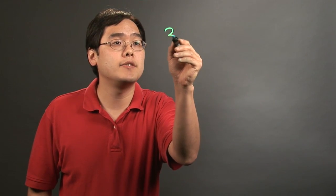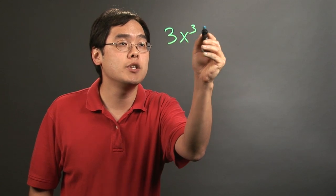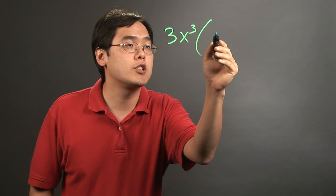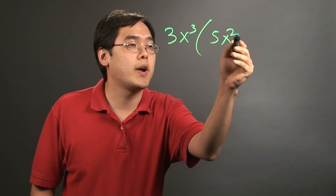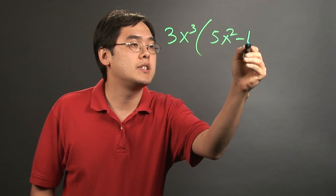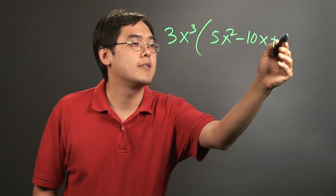So let's give an example and you'll see how this works. If you have 3x cubed times a polynomial, let's just say 5x squared minus 10x plus 4,